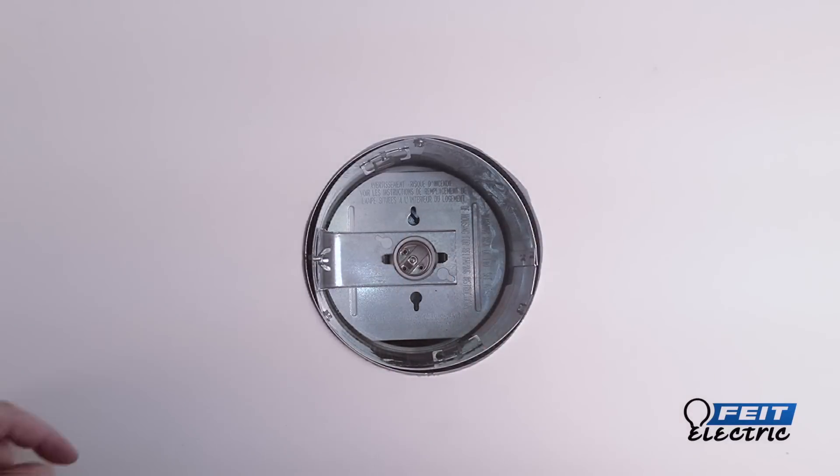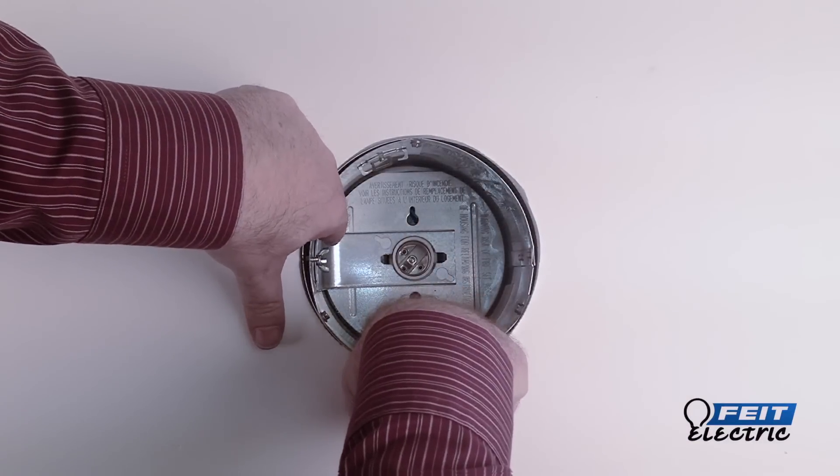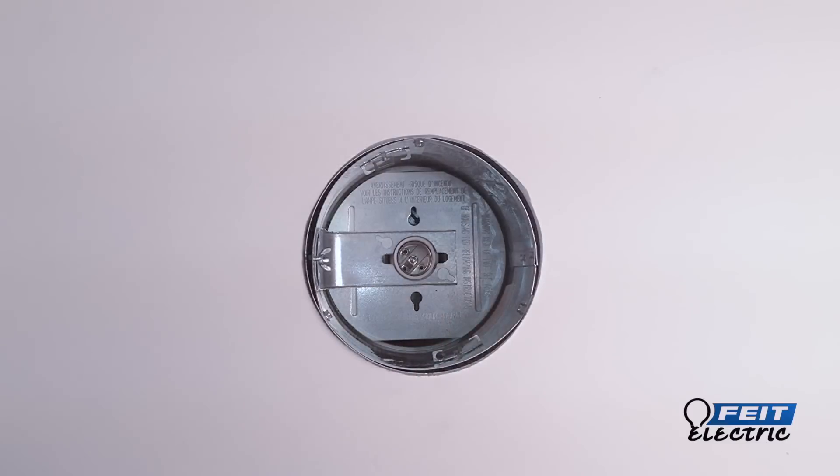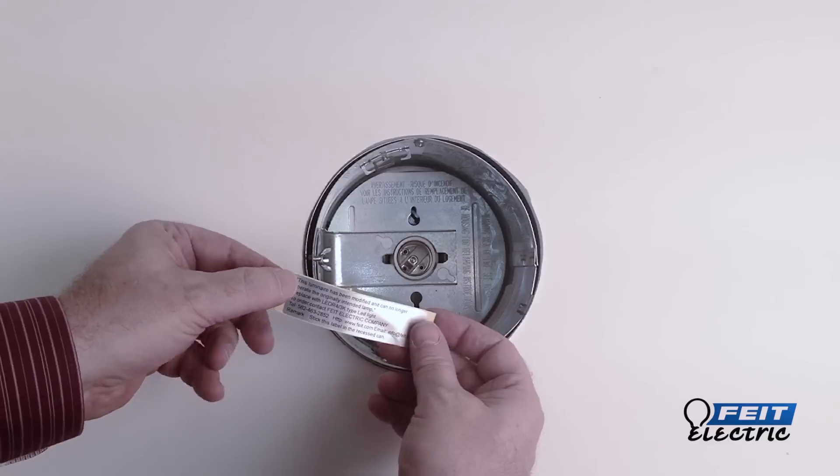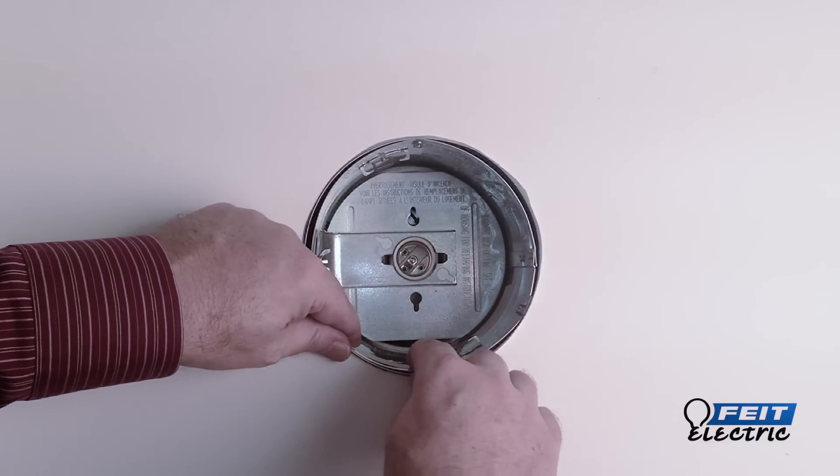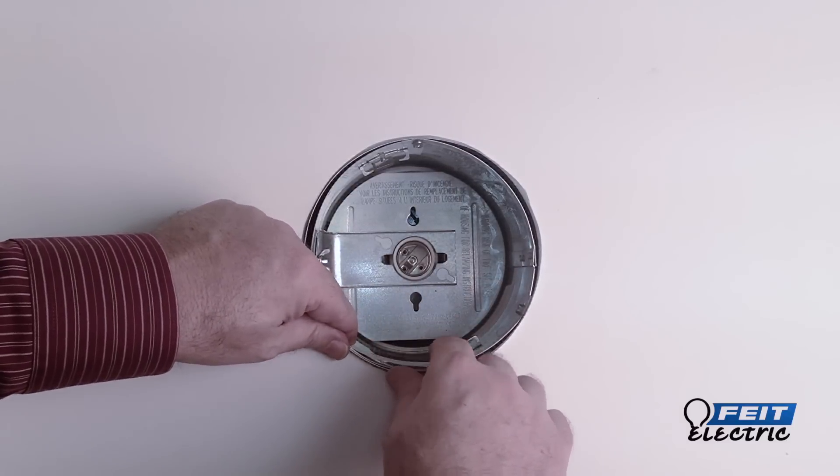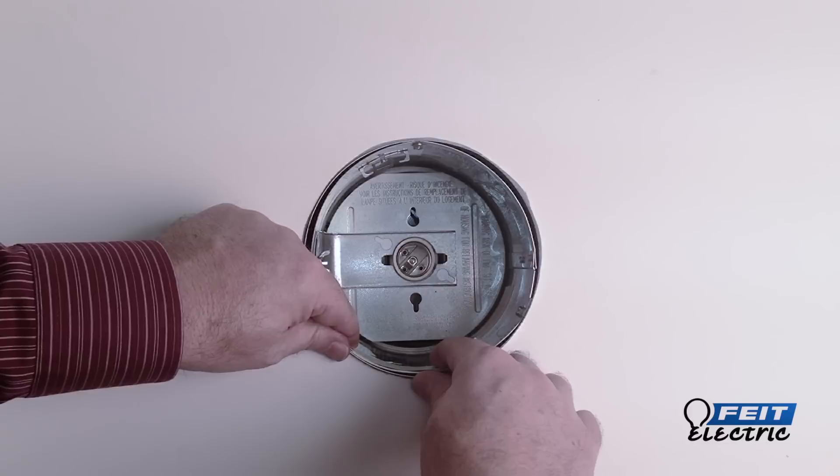If not, the lamp holder bracket needs to be removed and the label placed on the recessed fixture, as I'm showing here.